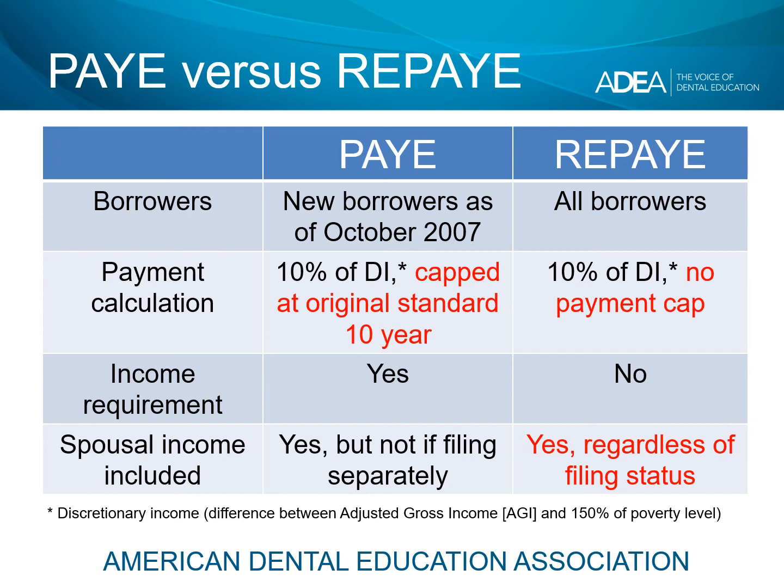But under Pays As You Earn, married borrowers who file a separate return will find that spousal income is not required and not included in the calculation of monthly payments. With REPAY, spousal income is always counted in the calculation of the payment, regardless of a married borrower's filing status.